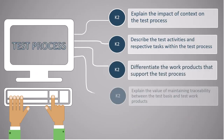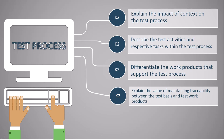Under this syllabus, we have to cover four subtopics. The first topic is, explain the impact of context on the test process. Here, we will come to know what are the different factors that influence the test process. The second topic is, describe the test activities and respective tasks within the test process. Here, I will explain each of the test activities in detail.